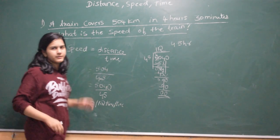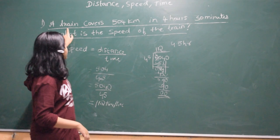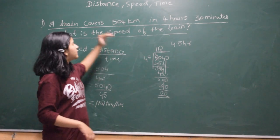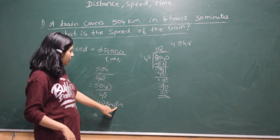I hope you understood this video. If the distance is 504 and time is 4 hours 30 minutes, then the speed of the train will be 112 kilometer per hour.